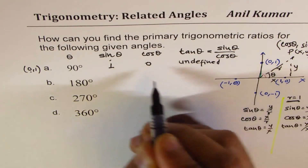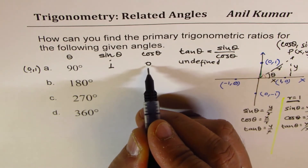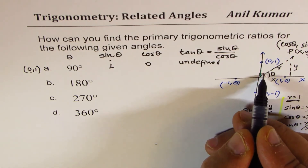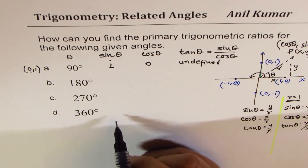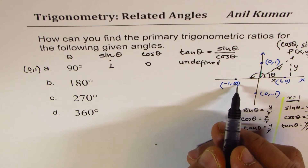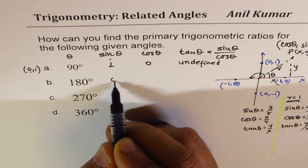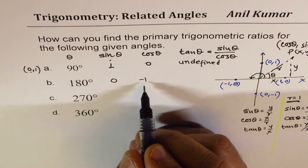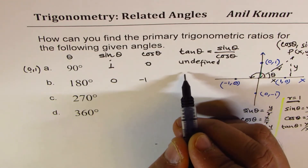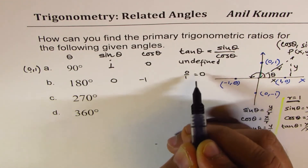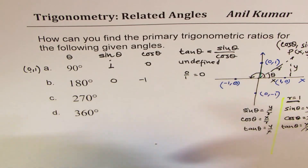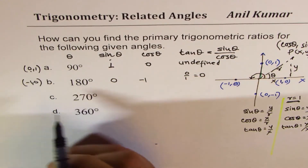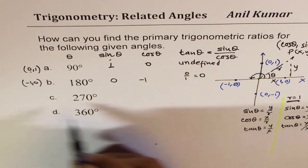You cannot divide by 0. Now let's look at the point at 180 degrees — that is this angle. The point is (-1, 0). So 0 corresponds to sine theta, -1 to cosine theta, and the ratio 0 over 1 equals 0, which is the value of tan theta.